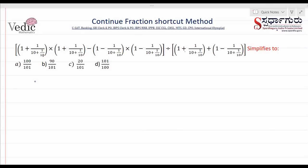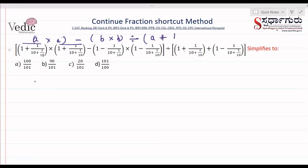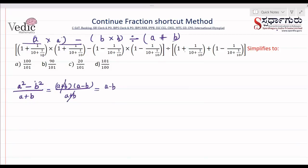So let's see. We just observe when we have a question like this — the first two terms are the same, so we can write it as a times a minus the next two, which are the same, as b times b, divided by a plus b. That gives us a squared minus b squared divided by a plus b. Using the expansion formula, a squared minus b squared equals (a plus b)(a minus b) divided by (a plus b). The (a plus b) cancels, leaving a minus b. So we need to find the value of a minus b.